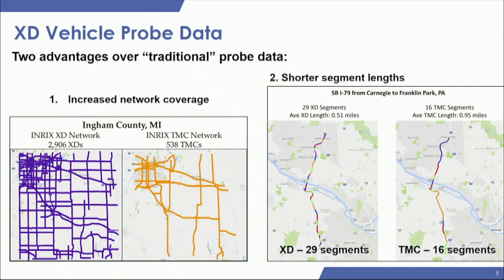For those not familiar with XD segments, they have two primary advantages versus traditional TMCs: increased network coverage and shorter segment lengths. Looking at the purple grid representing Ingham County, Michigan, you can see the XD network versus the orange TMC network. Within the city of Lansing, Michigan, you can see how much better the coverage is on smaller roads, and you also have more coverage in rural areas.